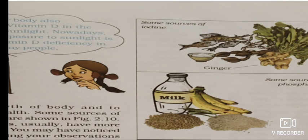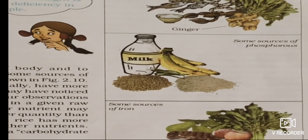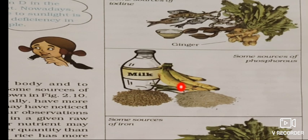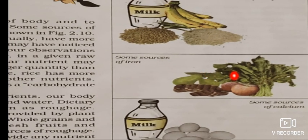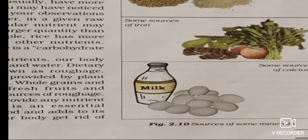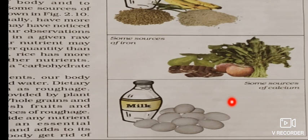Sources of iodine include ginger, fish, green vegetables, and the major source is salt derived from seawater. Sources of phosphorus include milk, banana, grains, and rice. Iron is found in green leafy vegetables, fruits like apple, and liver. Calcium is very important for our bones and teeth, and its sources include milk and eggs.